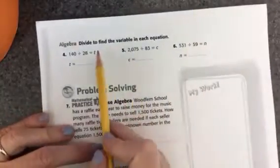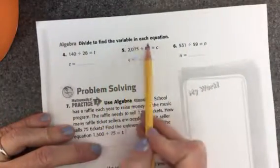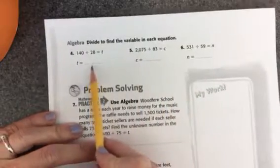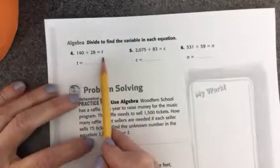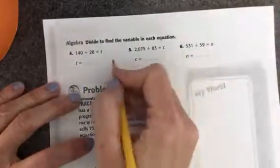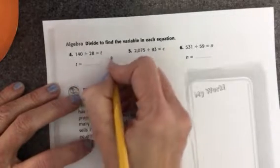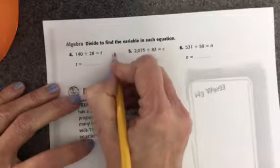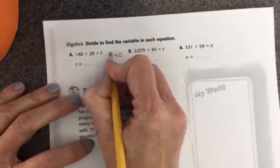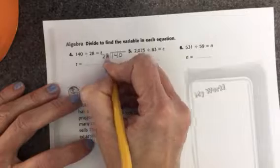Okay, here on the back we have divide to find the variable in each equation. Here I have 140 divided by 28. Let's try that one. I need to write it in a division box. I'm going to write it over here to the side so I have some room to work.